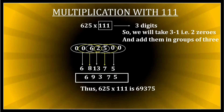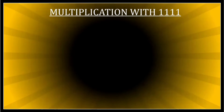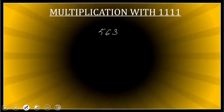It wasn't very difficult — quite simple. Multiplying by 111 without any major calculation work is quite simple. Do you want to try one more question? Let's take 563 multiplied by 111.